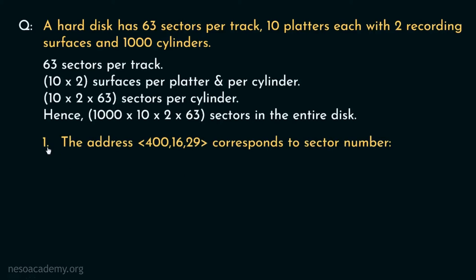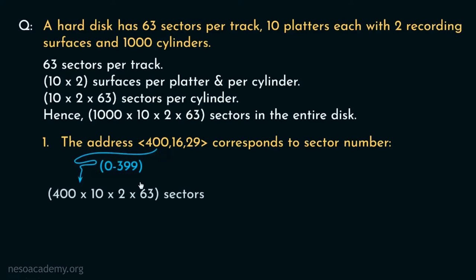The first question asks: the address 4,16,29 corresponds to which sector number? To solve this: cylinder number 4 means we must cross cylinders 0 through 3, that is 4 cylinders. Each cylinder has 20 surfaces and each surface has 63 sectors, so crossing 4 cylinders means crossing 4 times 20 times 63 equals 5,040 sectors. Wait — the address is actually 400,16,29, so crossing cylinders 0 to 399 means 400 times 20 times 63 equals 504,000 sectors.